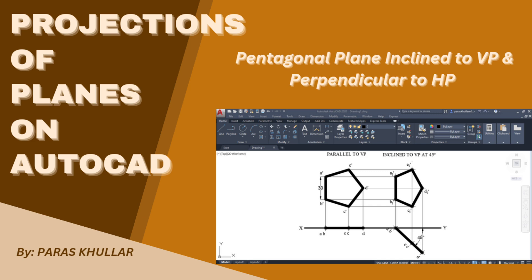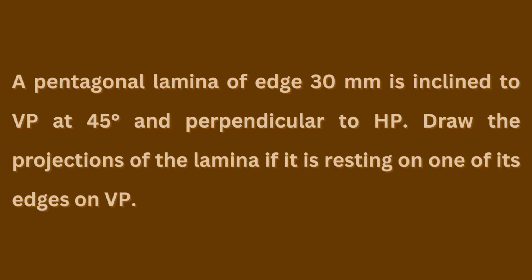Hello students. In this video we will discuss a question of projections of planes in which the plane is inclined to VP and perpendicular to HP. A pentagonal lamina of edge 30 mm is inclined to VP at 45 degrees and perpendicular to HP. It is a regular pentagonal lamina where all sides are equal to 30 mm, inclined at 45 degrees to VP and perpendicular to HP.